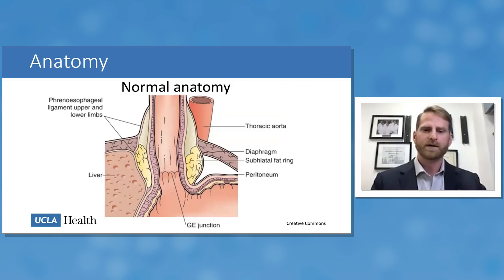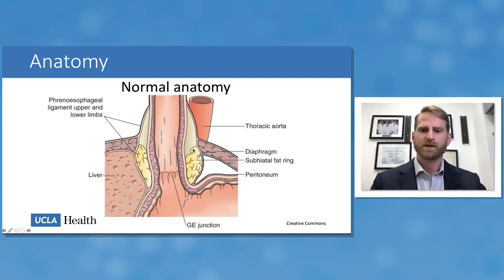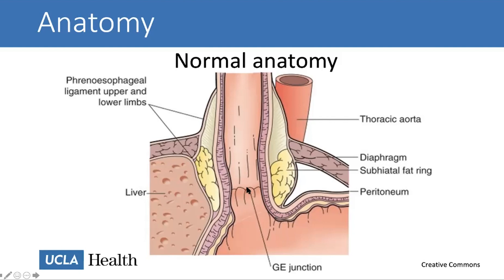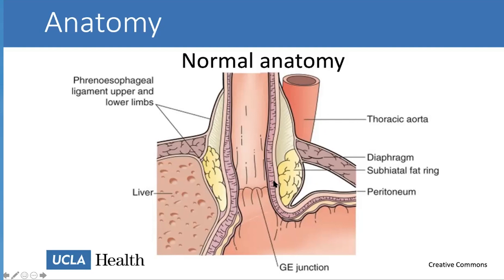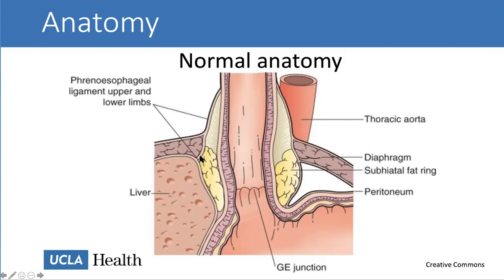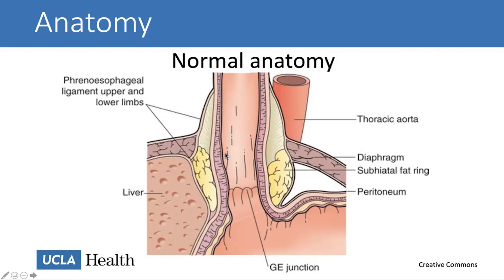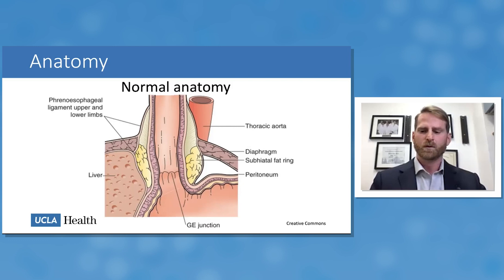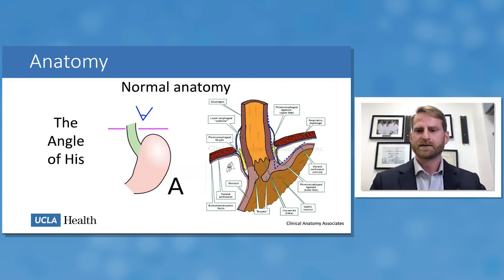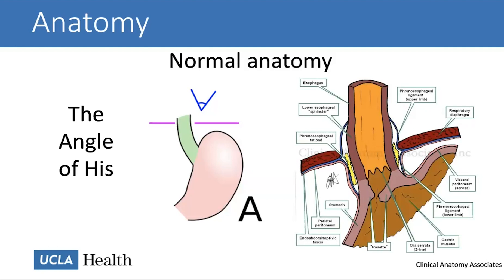This is a cross section of normal anatomy at the gastroesophageal junction, or GEJ. The diaphragm muscle sits transversely across the screen. In cross section we see that normal anatomy places the esophagus and GEJ well below the diaphragm, usually a couple of centimeters, with several centimeters of intra-abdominal esophageal length. The esophagus is held in place at the hiatus by the phrenoesophageal ligaments.